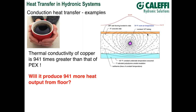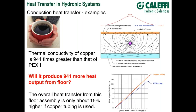The answer is no. Based on a finite element model, the copper tube does produce higher heat output — but only roughly about 15% higher. One question submitted prior to the webinar asked about the difference in heat transfer rate between PEX tubing and PEX-aluminum-PEX tubing. It's very, very small — literally on the order of maybe 1% better at most for the PEX-aluminum-PEX.